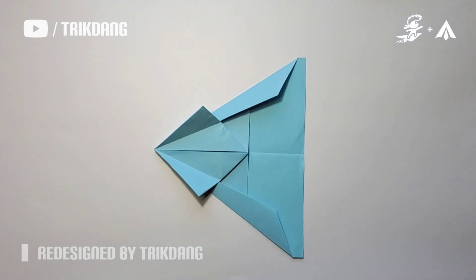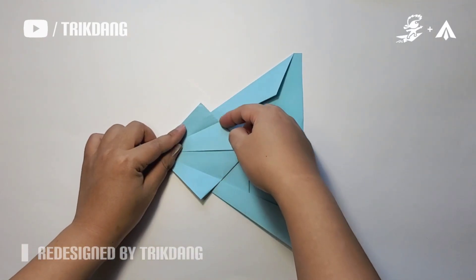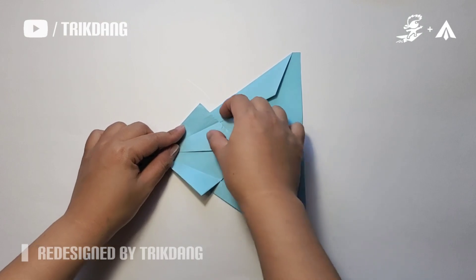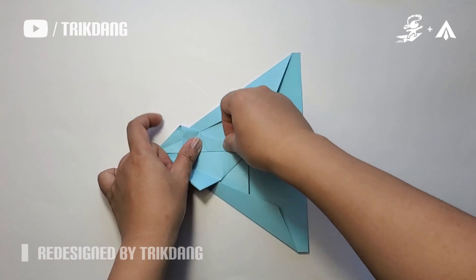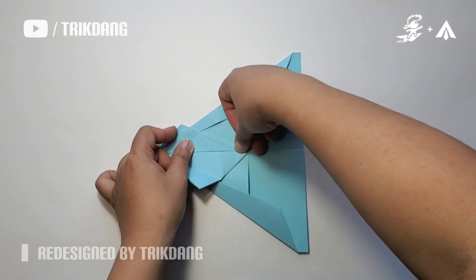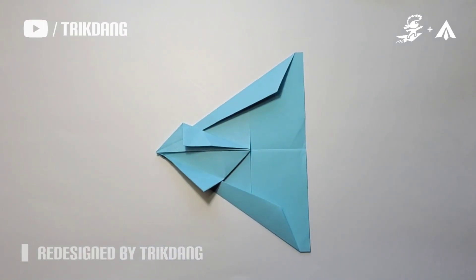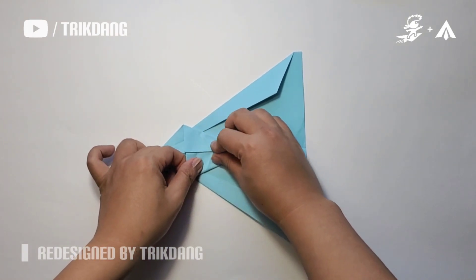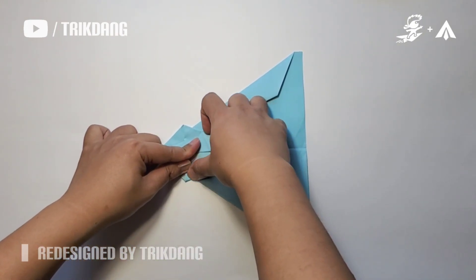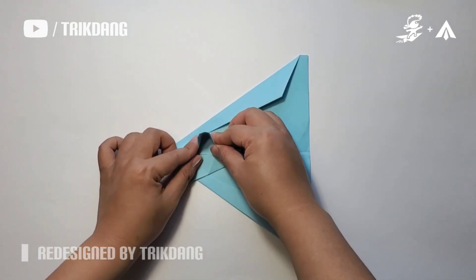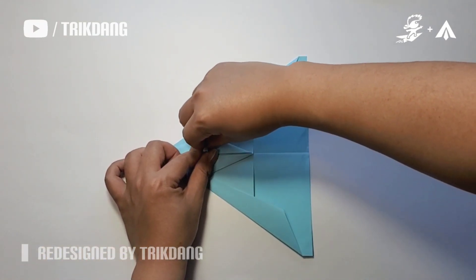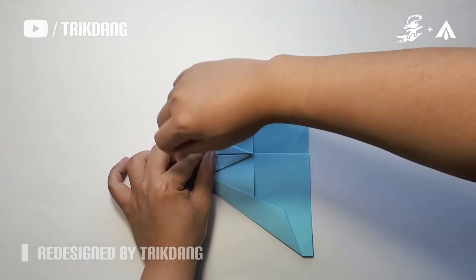Now we're going to create the head of the swallow. Let's start from this edge to this crease right here. Now let's create the head of the plant, or the nose, or whatever you call it.